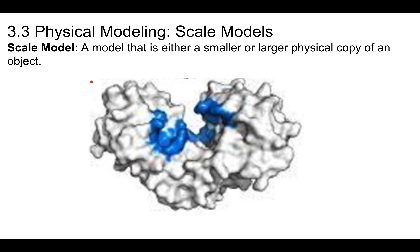Scale models are either smaller or larger than the physical object they represent. For instance, an enzyme like amylase — the enzyme your body uses to break down starches into smaller sugars like glucose — is far too small for us to see. So we need to create models that allow us to visualize what it actually looks like. This is a physical scaled model of an amylase enzyme.